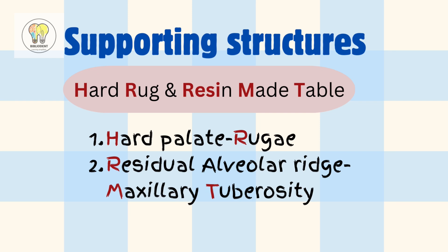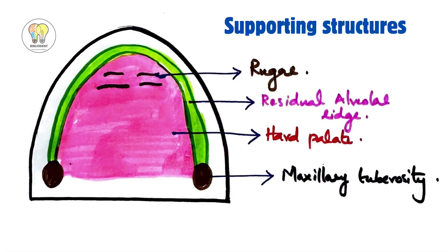H and R for hard palate and rugae, resin for residual alveolaris, M and T for maxillary tuberosity. Here is the diagram for supporting structures labeling rugae, residual alveolar ridge, hard palate, and maxillary tuberosity.